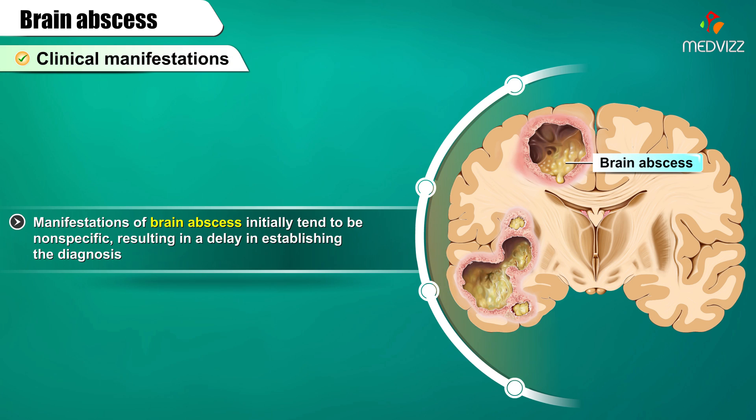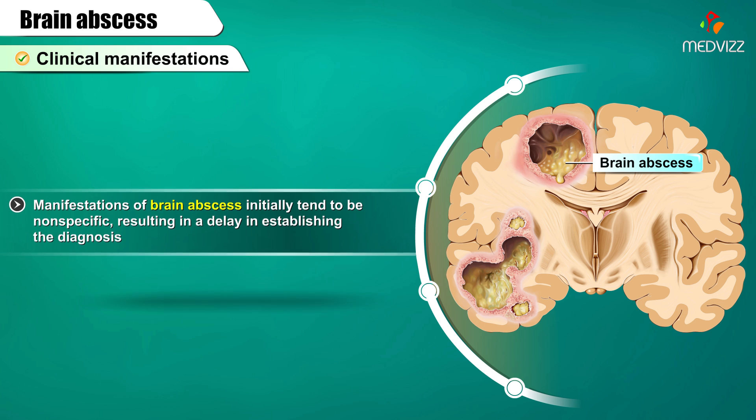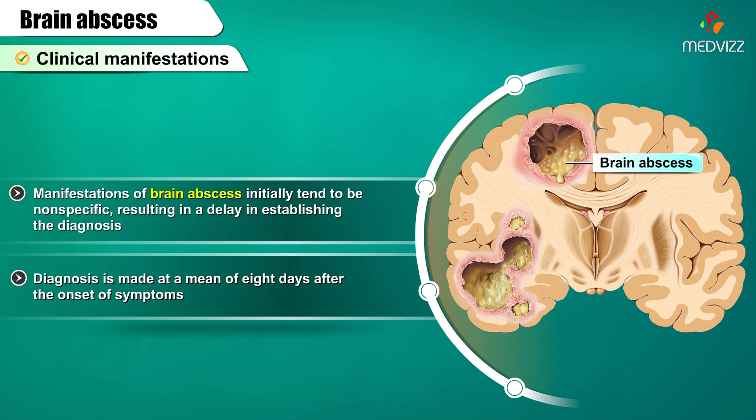Brain abscess complicates 2-4% of cases of bacterial endocarditis. Cyanotic congenital heart diseases are most common in children. Clinical manifestations: The manifestations of brain abscess initially tend to be nonspecific, resulting in a delay in establishing the diagnosis. The diagnosis is made at a mean of 8 days after the onset of symptoms.